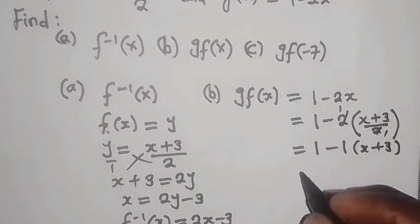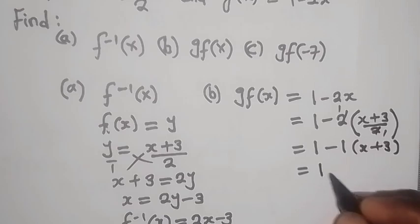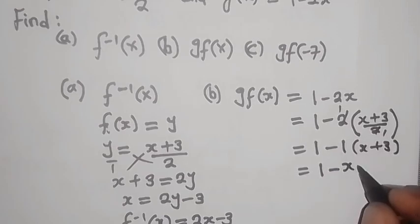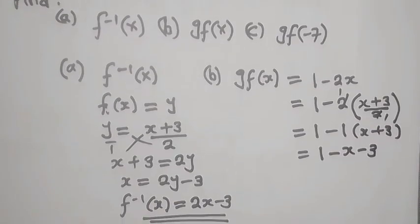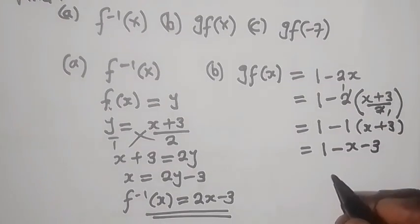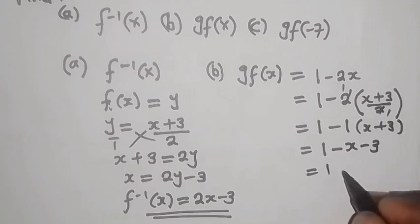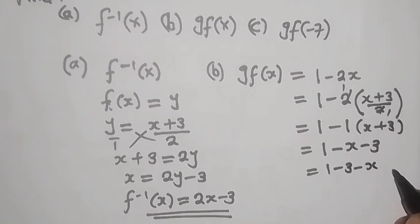Now after that, now we can still simplify. 1 minus this times that, just x, this times that, just 2, negative 3. Now from there, what you're going to have now is, you can now say, put this together, 1 minus 3, then minus x.